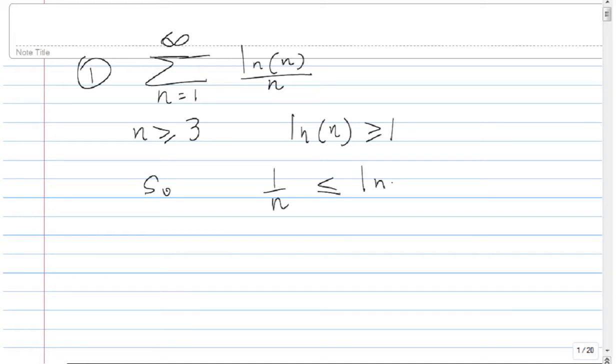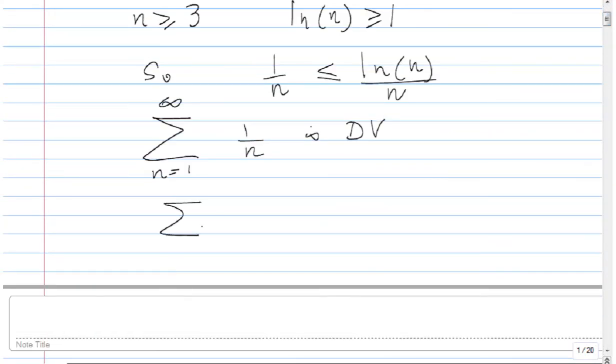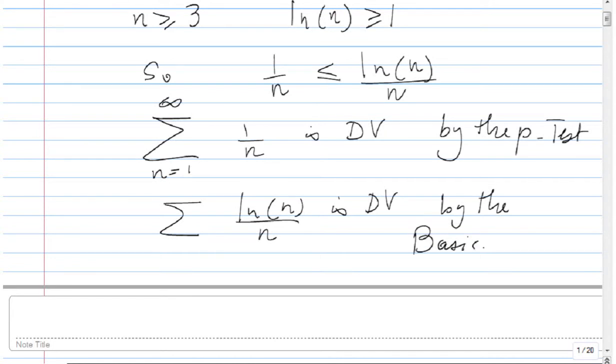So now we know that from the p test that the series 1 over n from 1 to infinity is divergent. So this tells you that Sigma is divergent by the p test. So this one here ln of n over n is divergent by the basic comparison test or BCT.